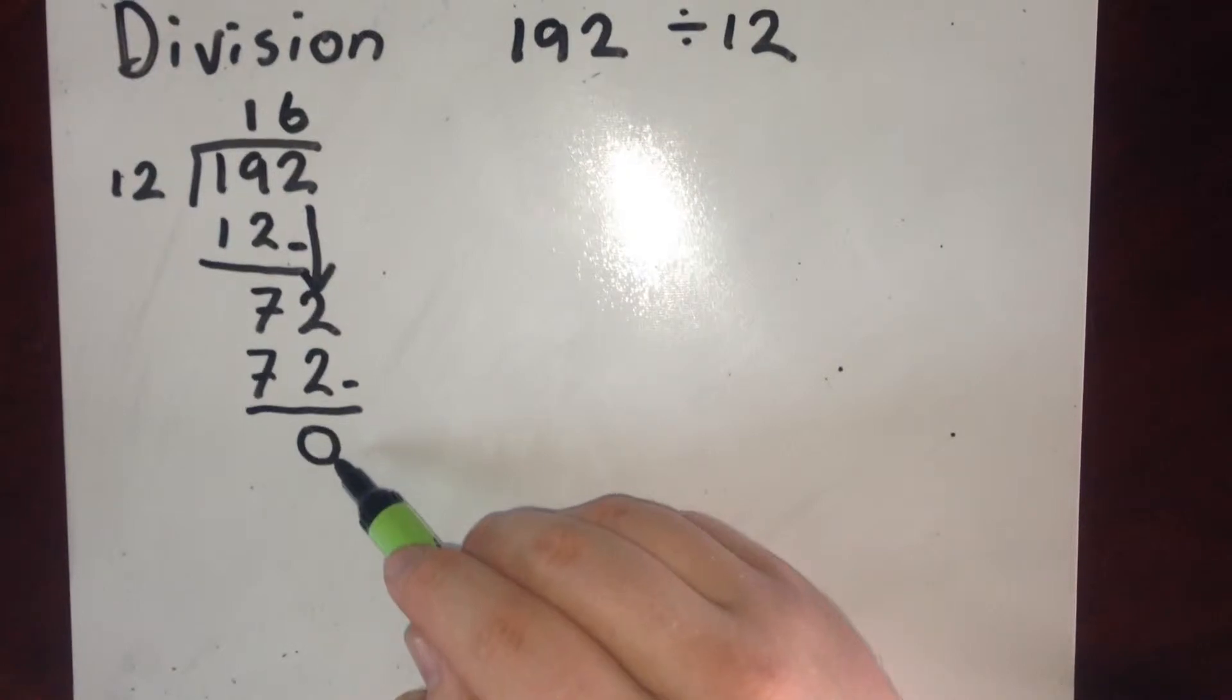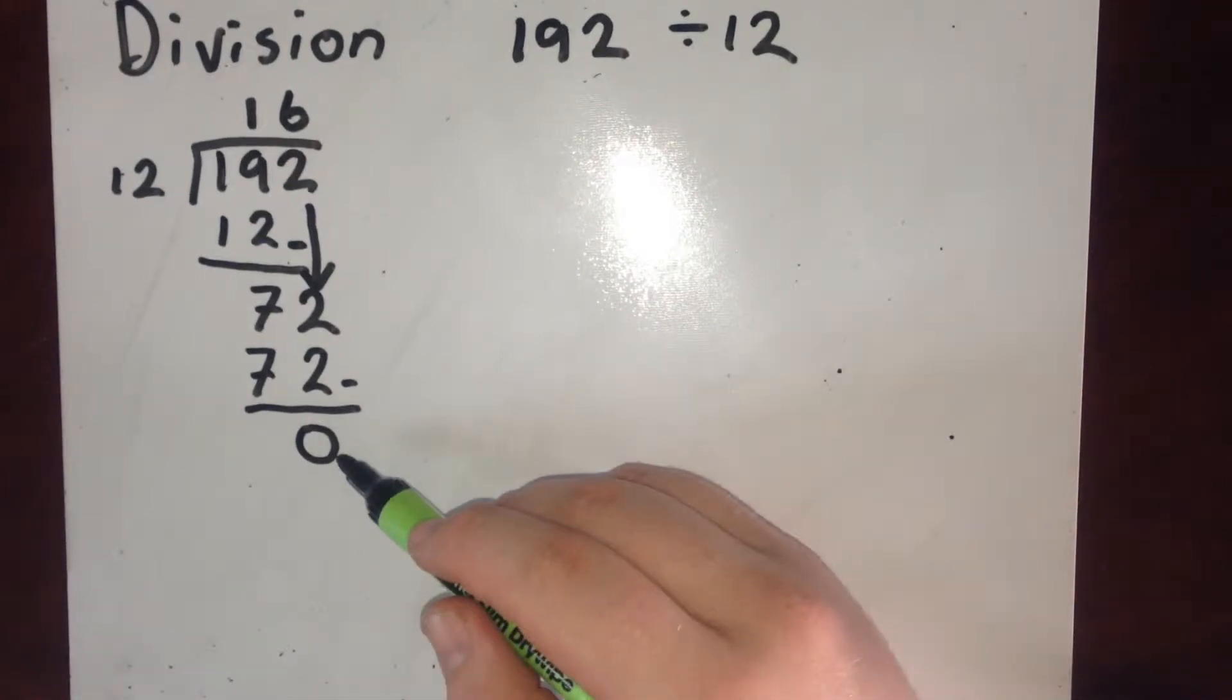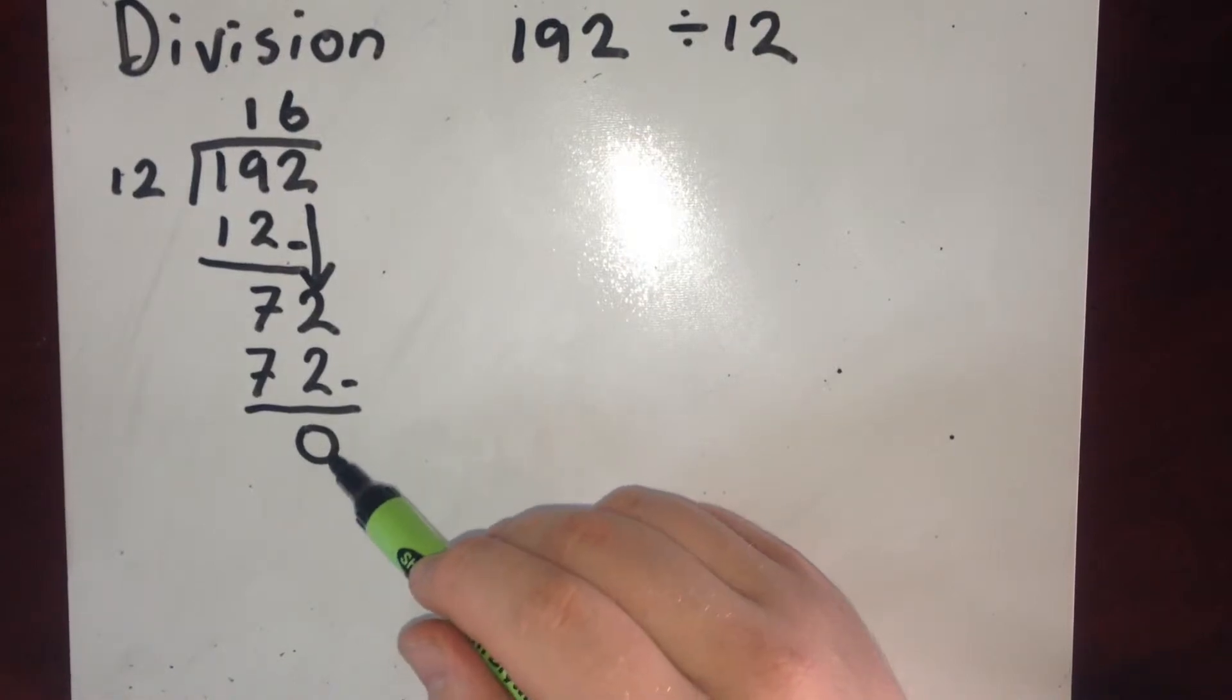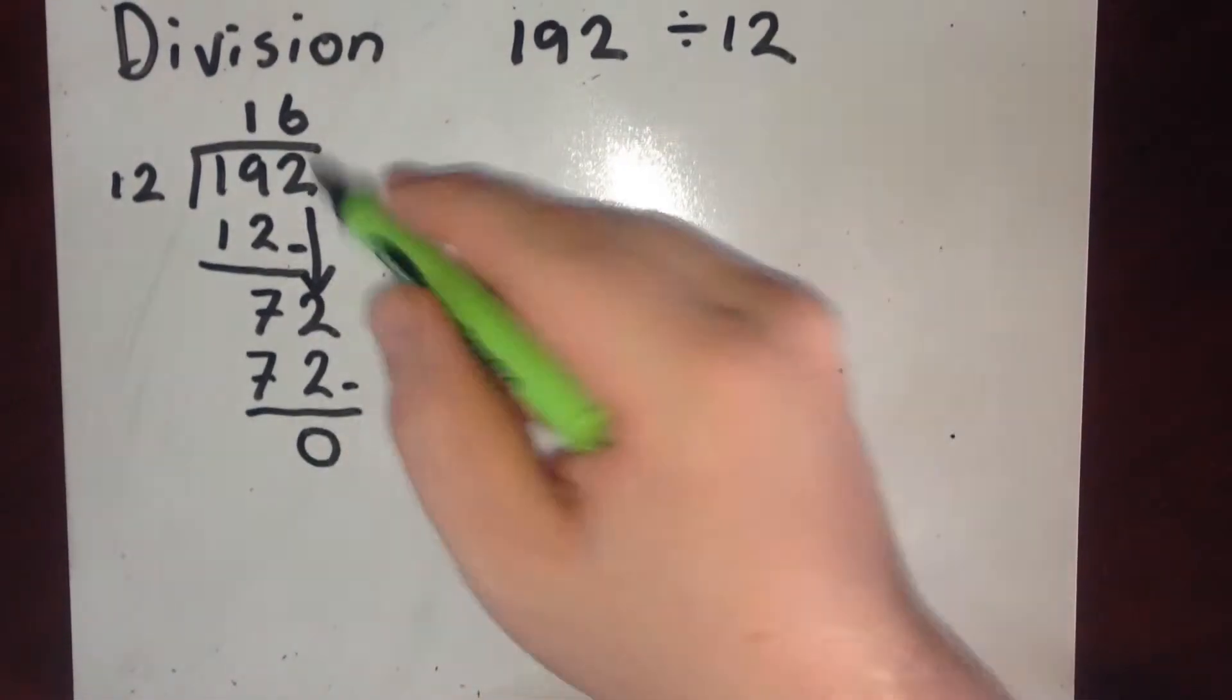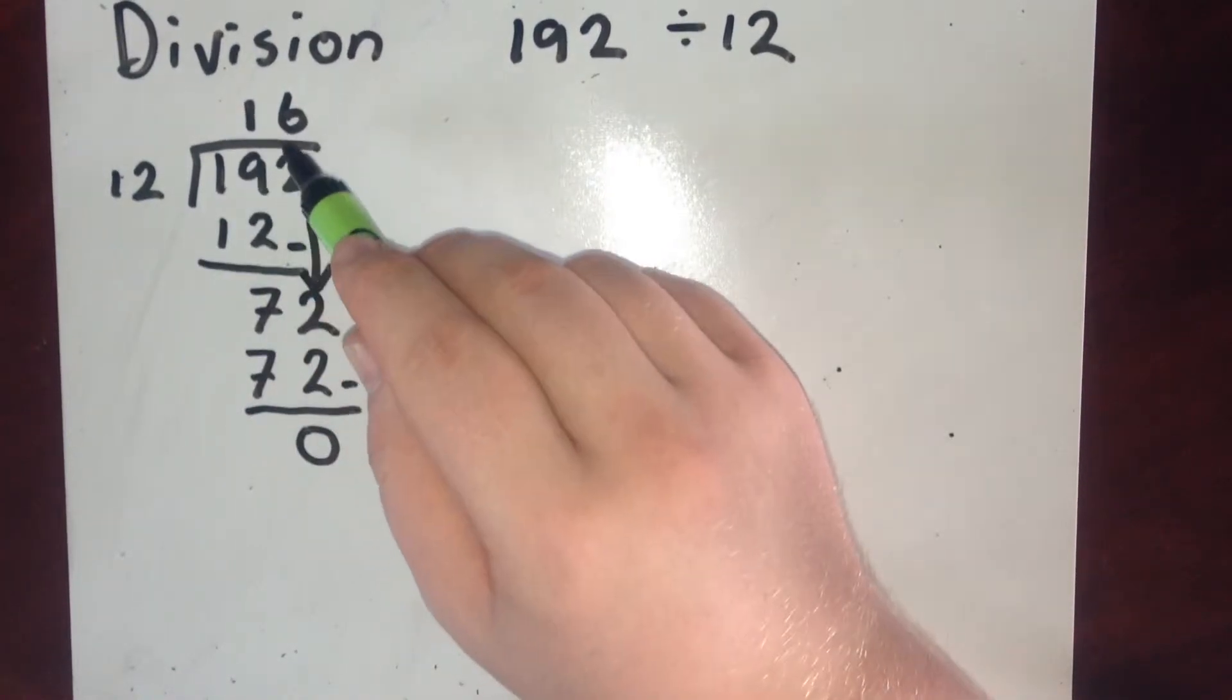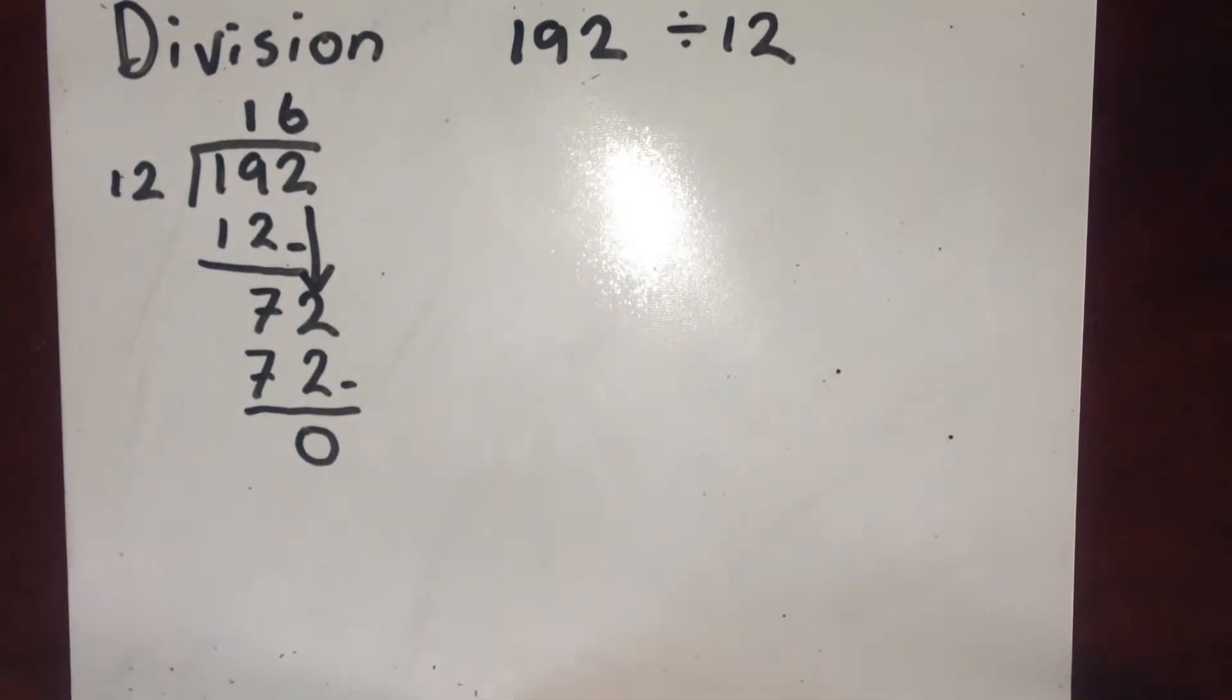Once I've got to 0, I know that this division is ended and there's no remainder. So 192 divided by 12 is 16. That's long division.